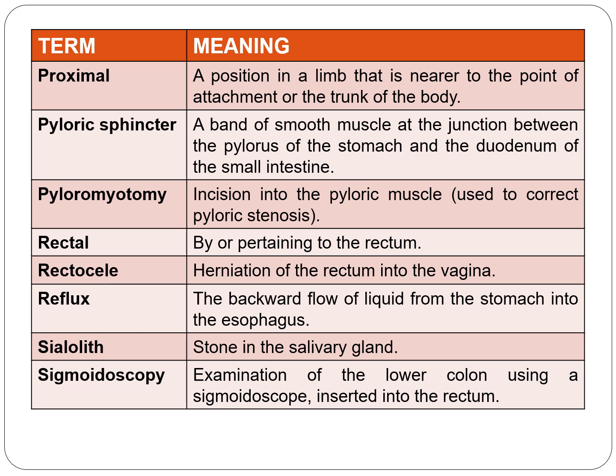The pyloric sphincter is a band of smooth muscle at the junction between the pylorus of the stomach and the duodenum of the small intestine. Pyloromyotomy is incision of the pyloric muscle, used to correct pyloric stenosis.